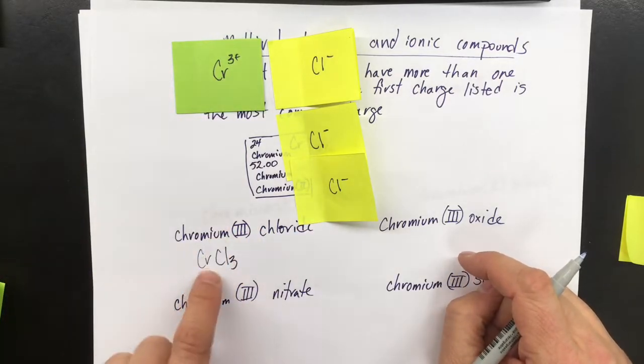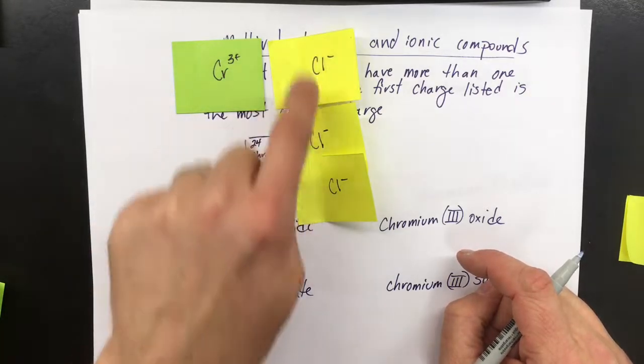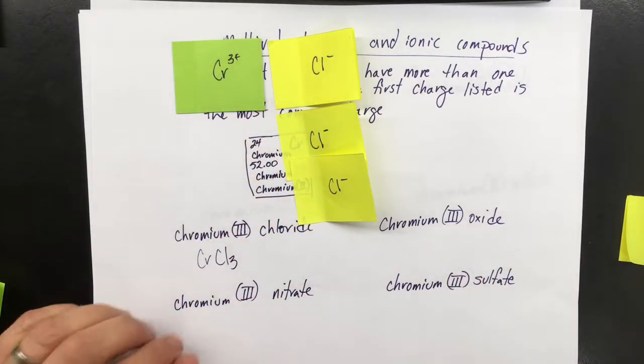Often people, once they see this 3, want to put a 3 down here. That's incorrect. This is the charge. Chromium(III) has a 3+ charge, and the chlorides each have a 1- charge.